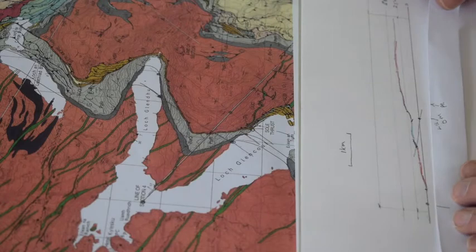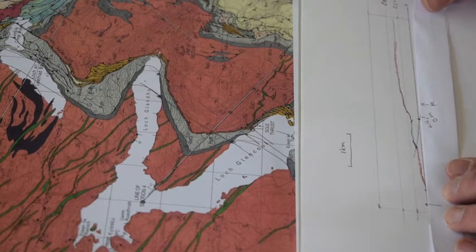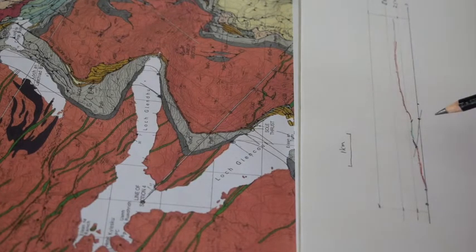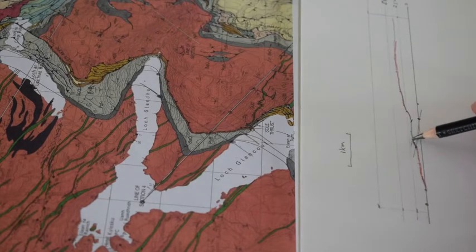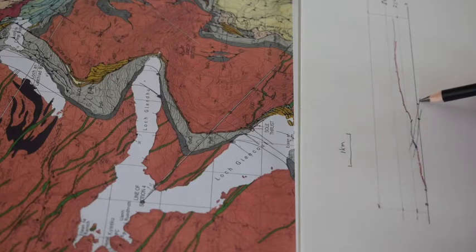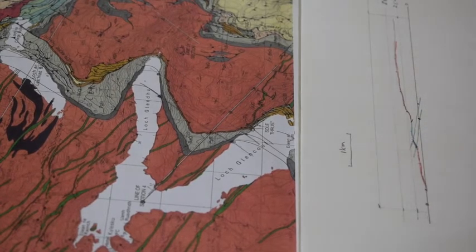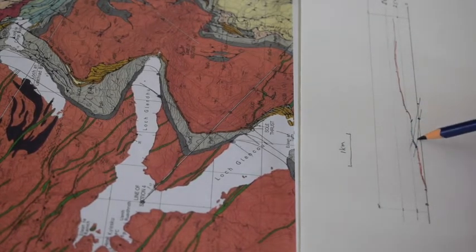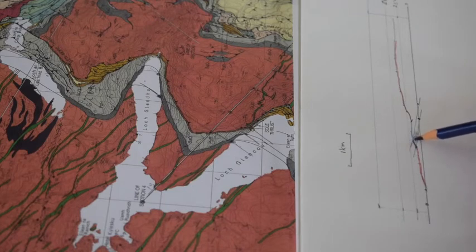Here's the structure contour. Here it intersects the line of section just there. So that is base of the pipe rock, top of the lower quartzite. Take that, transfer it onto my line of section here. That's where it is. And again, take the surface geology and join it up. So there is our piece of lower quartzite. Just so we know what we're doing, let's colour it in.